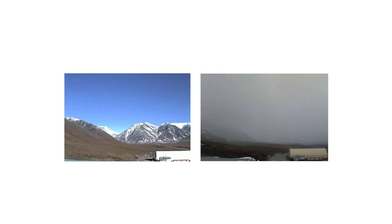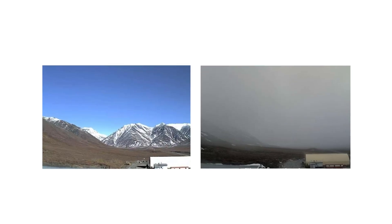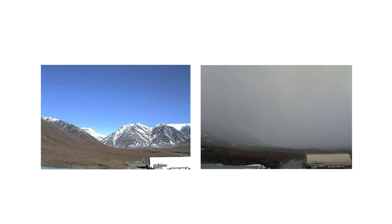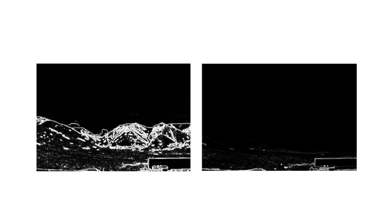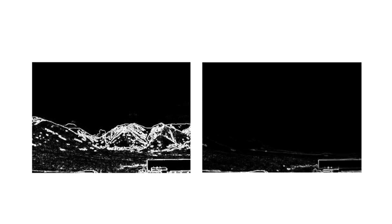From a clear image, we can identify a number of edges or markers. On a clear day, these markers are sharp with a strong edge strength. When we look at a low visibility day, these edges are no longer visible.